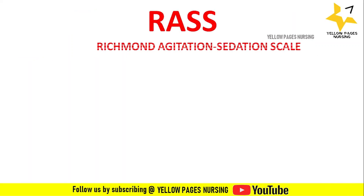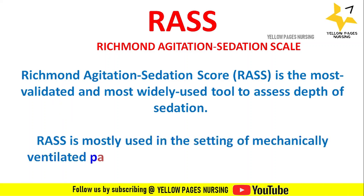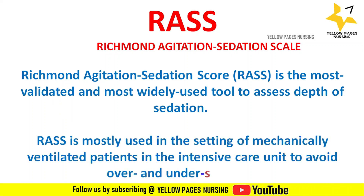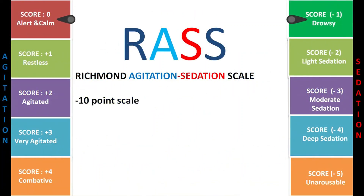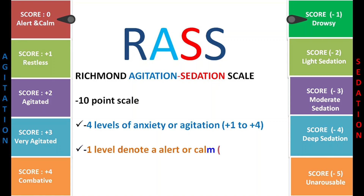RASS is mostly used in mechanically ventilated patients in the ICU to avoid over- and under-sedation. The Richmond Agitation-Sedation Scale is a 10-point scale: levels plus 1 to plus 4 denote levels of anxiety or agitation, level 0 denotes alert and calm, and levels minus 1 to minus 5 denote levels of sedation.